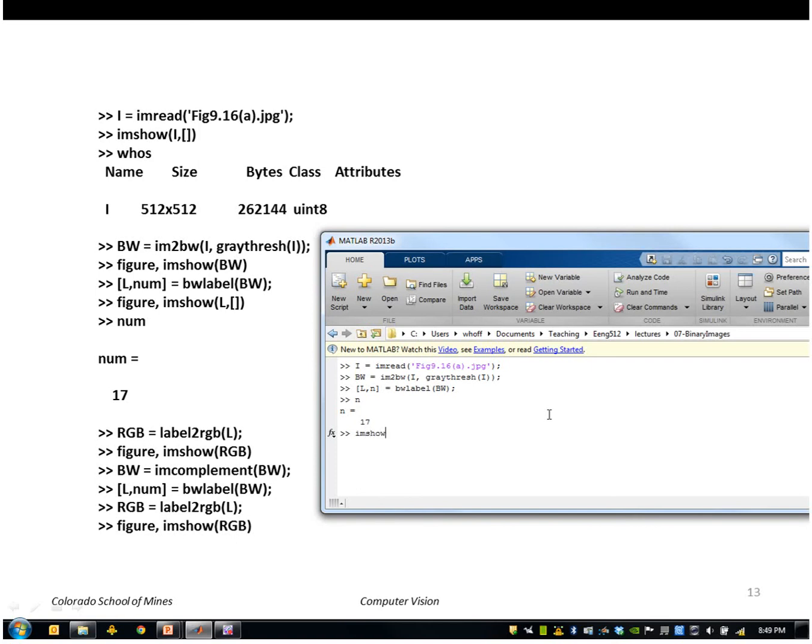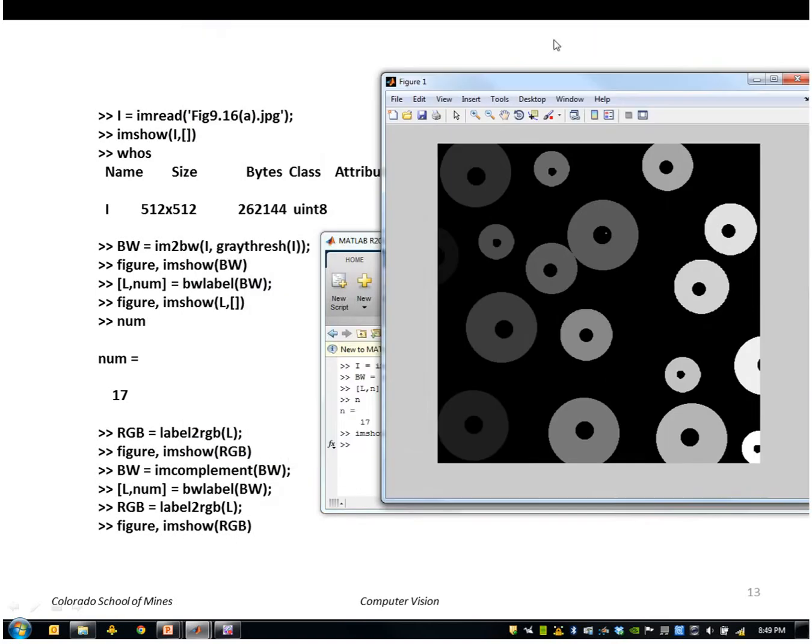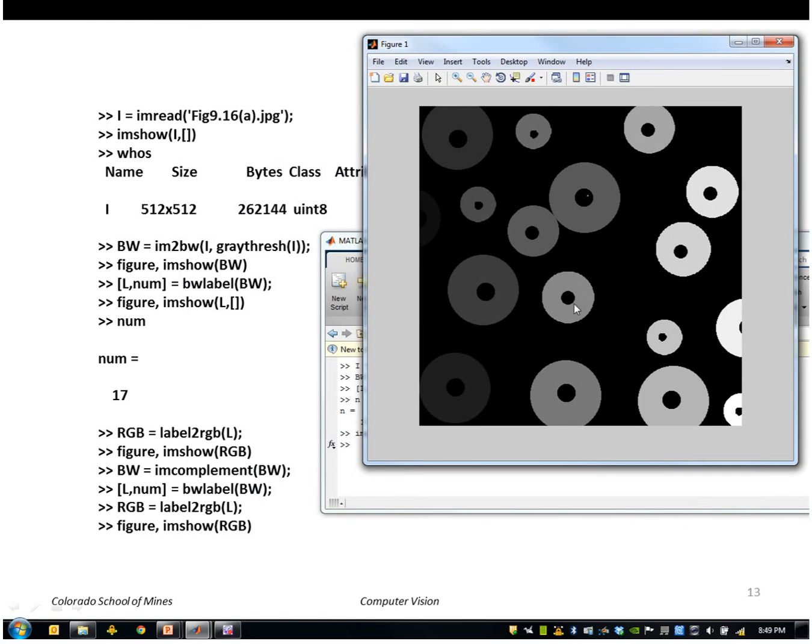If we look at the label image, you can see it's a grayscale image where the color here corresponds to the label that was assigned to each region.